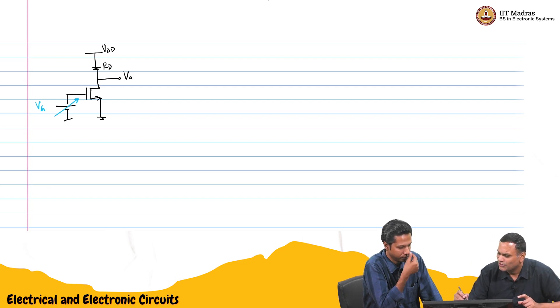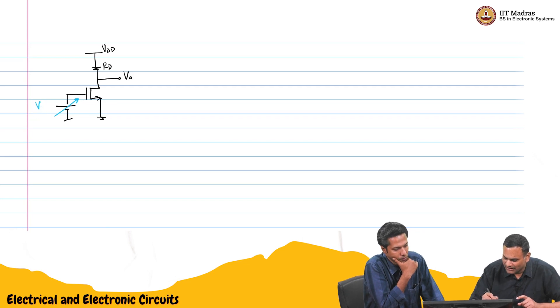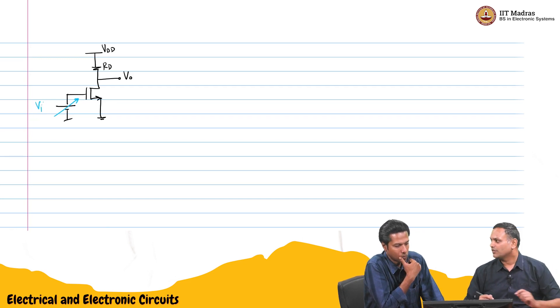Maybe I will just call it Vi, right. We can directly plot Vo versus Vi.